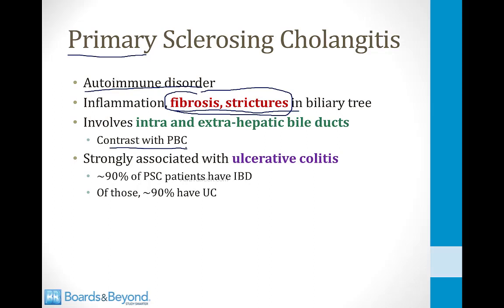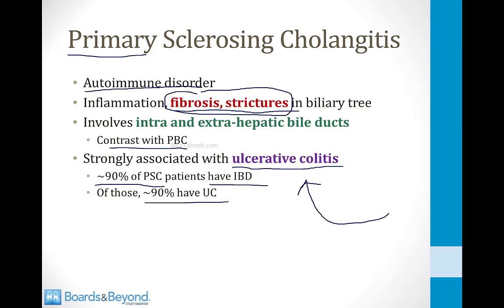Sclerosing cholangitis is strongly associated with ulcerative colitis — you can think of it as mostly a complication of ulcerative colitis. 90% of primary sclerosing cholangitis patients also have inflammatory bowel disease, and of these, 90% have ulcerative colitis, not Crohn's.